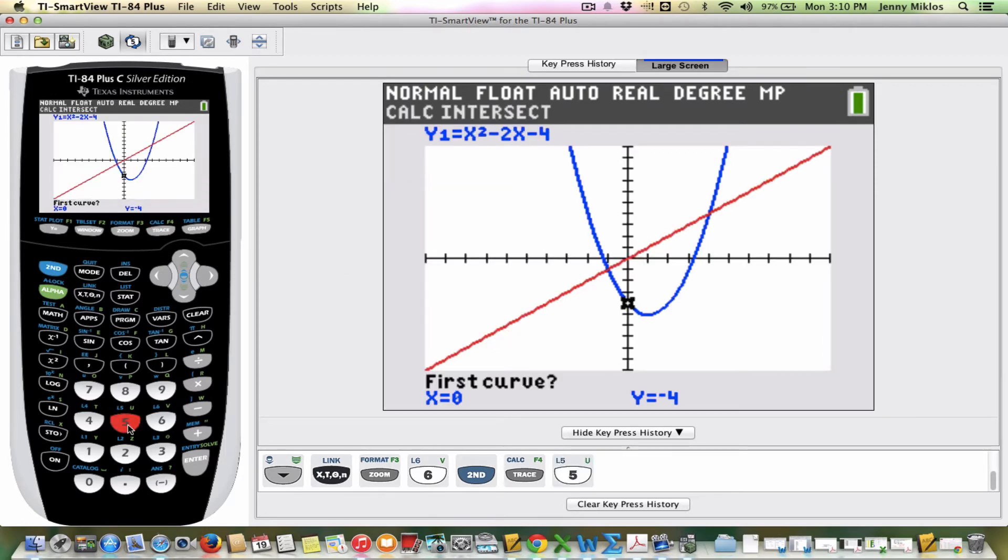And it's actually pretty easy to go ahead and use this. It's just going to ask us a few questions. And it's going to ask, is this the first curve? So for example, if we had graphed more than two equations, I would need to narrow it down to the two equations that are intersecting.